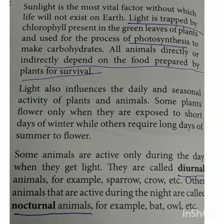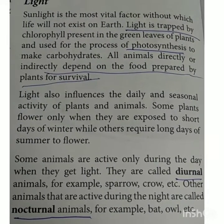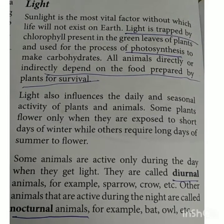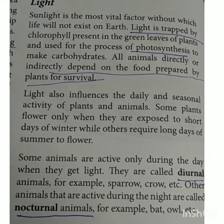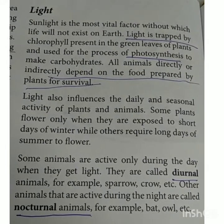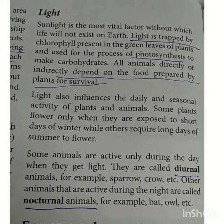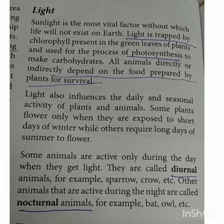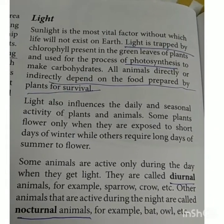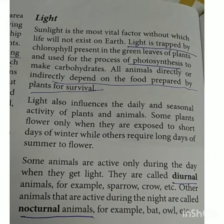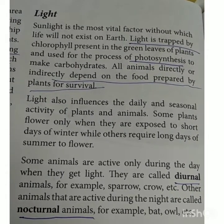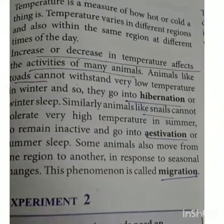Animals depend on plants for their survival. Light also influences the daily and seasonal activity of plants and animals. Some plants flower only when they are exposed to the short days of winter, while others require the long days of summer to flower. Similarly, some animals are active only during the daytime when they get light — these are called diurnal animals, like sparrows and crows. Animals that are active during the night are called nocturnal animals, for example bats and owls. Diurnal animals are active in the daytime with light present; nocturnal animals are active at night.